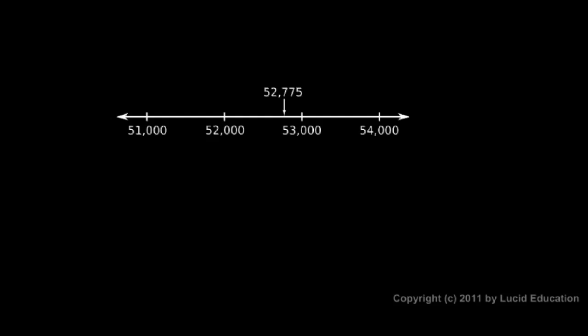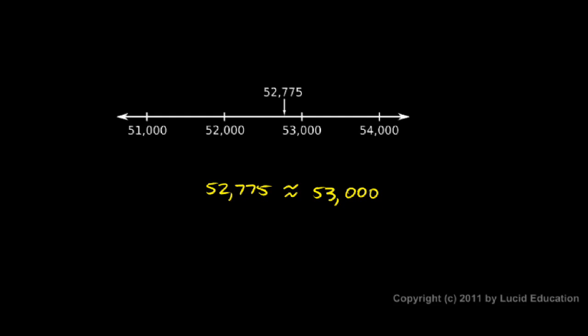One more example. This number line is marked off in increments of 1,000 — you see the numbers: 51,000, 52,000, and so on. The number 52,775 is marked at a particular place on the number line. If we round it to the nearest 1,000, we can see it's closer to 53,000 than it is to 52,000. So 52,775 is approximately equal to 53,000. The number 53,000 is simpler to work with than 52,775, making multiplication, division, or other math a little bit easier. So in cases where rounding is appropriate, it can result in simplifying the problem.